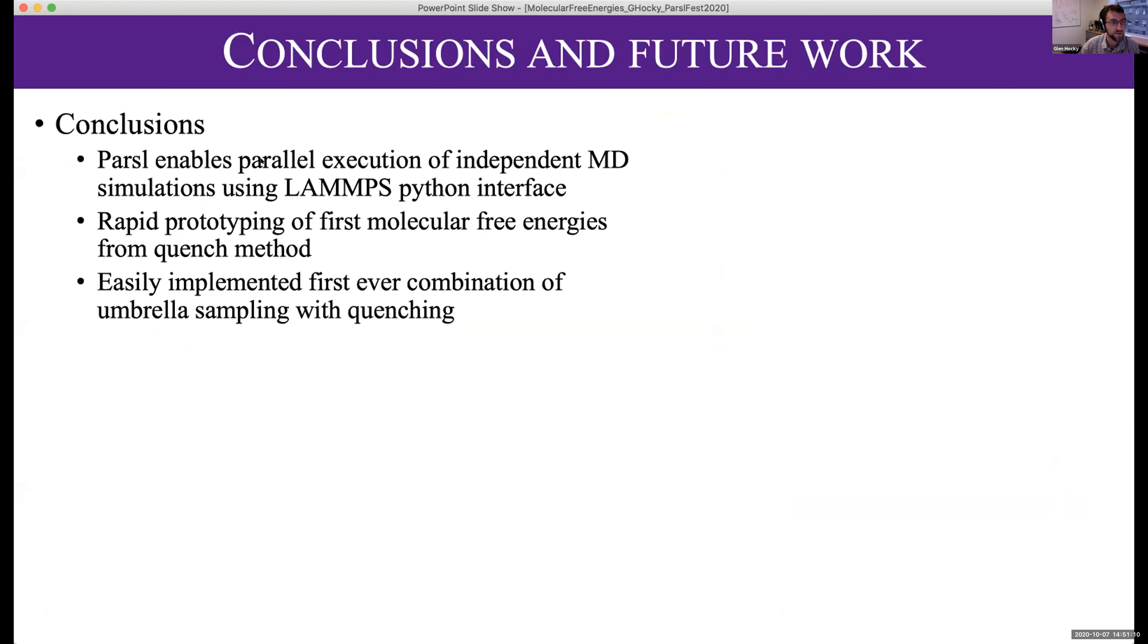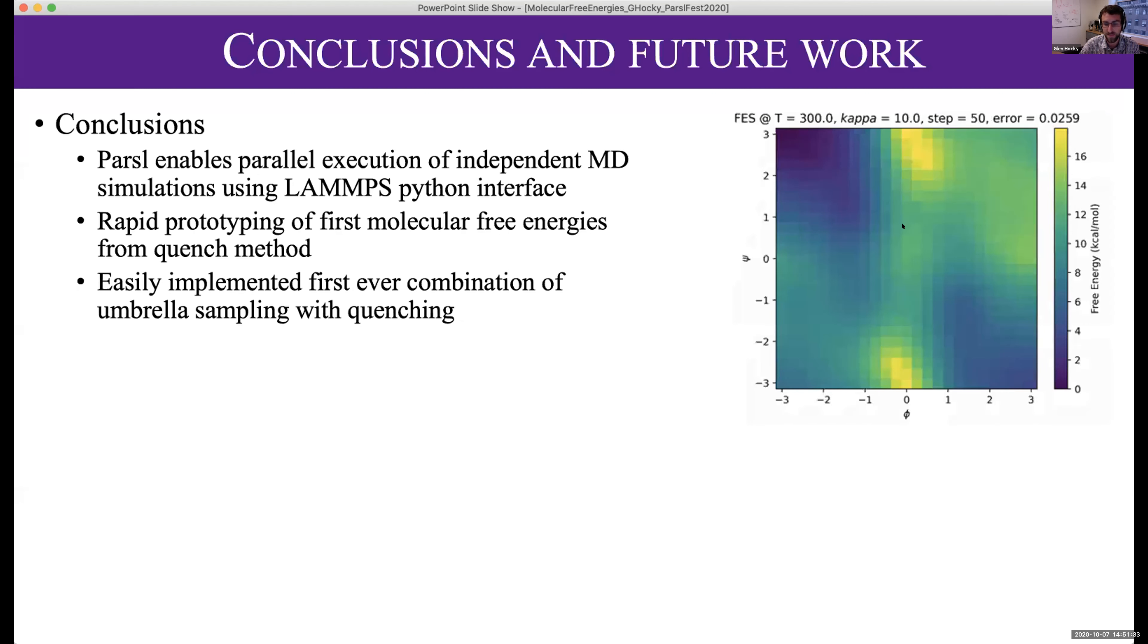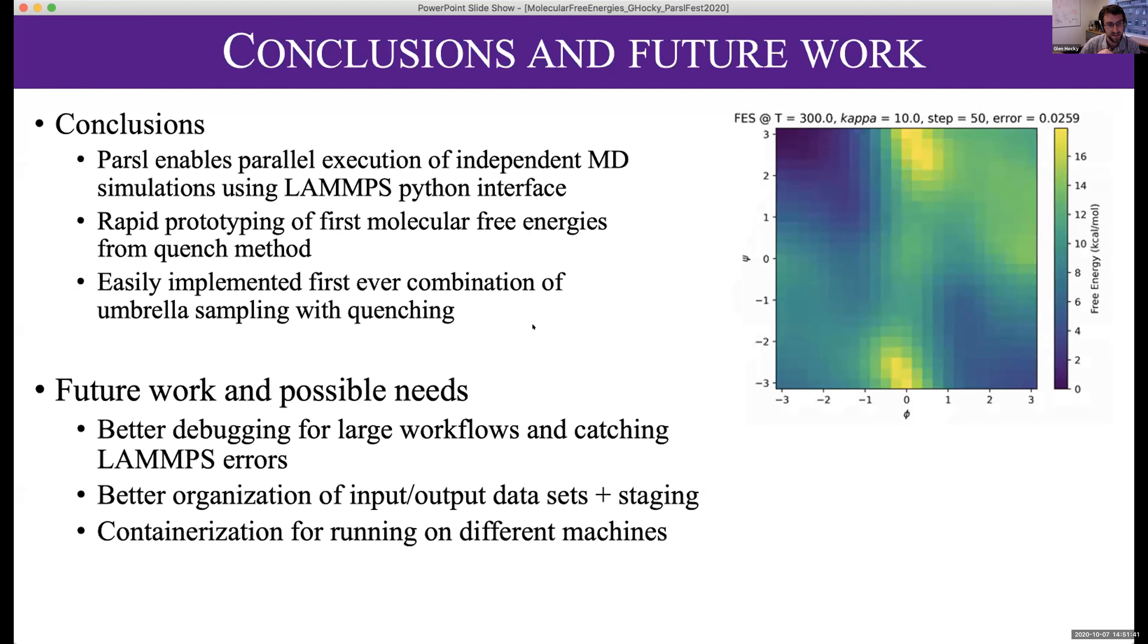To conclude, we were able to easily do parallel execution of different MD simulations using LAMPS. In the new one, using the LAMPS Python interface and getting back information, we could rapidly prototype these standard free energy methods and this new quench method. We implemented this even more complicated method combining umbrella sampling and quenching, and we get this nice result that's hot off the presses. In the future, we need to work on better debugging tools so we know when the MD simulation fails and can tell the difference between MD simulation failure, memory error, or cluster error.